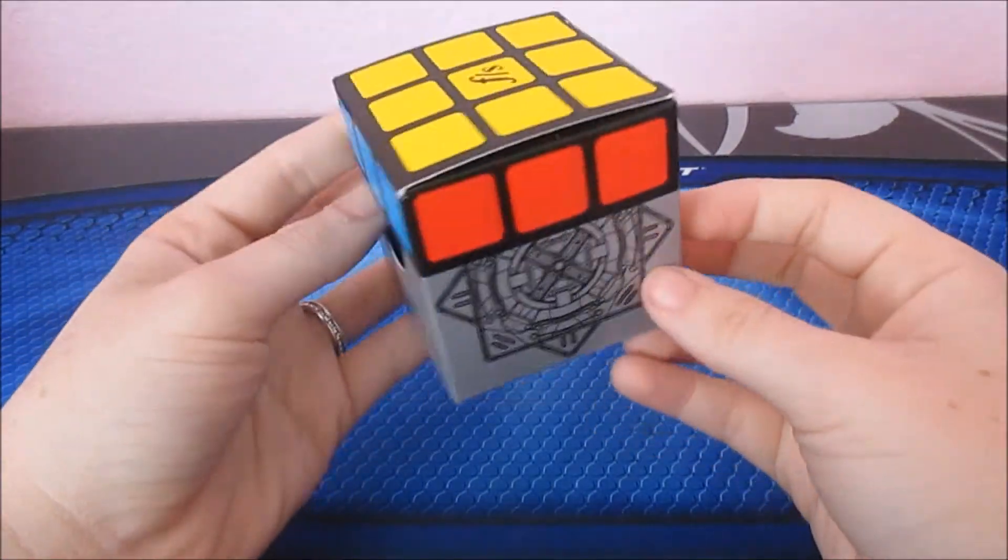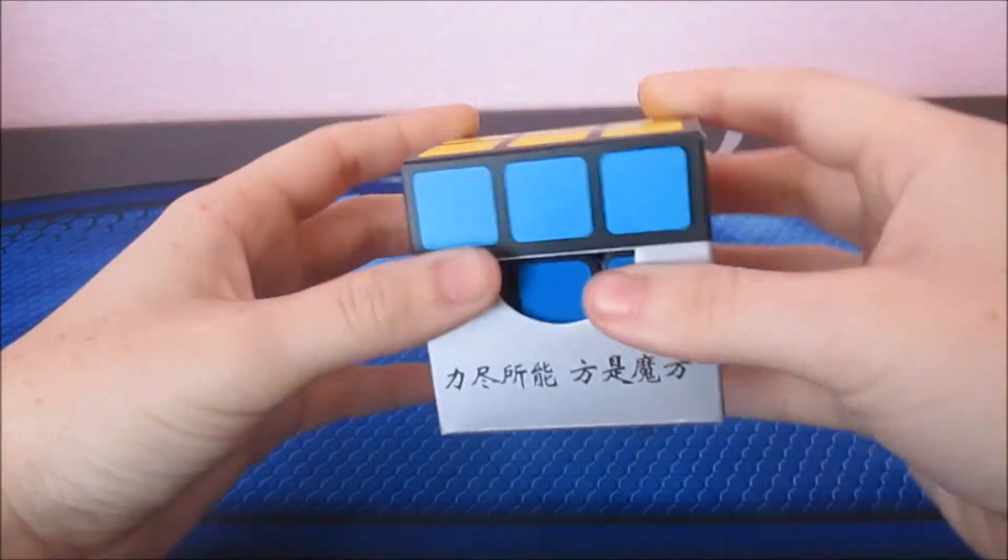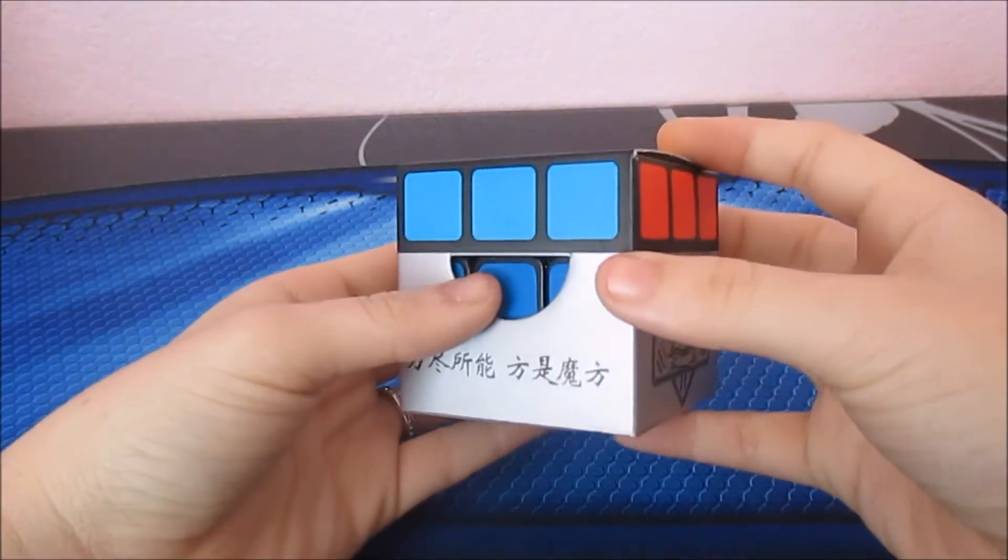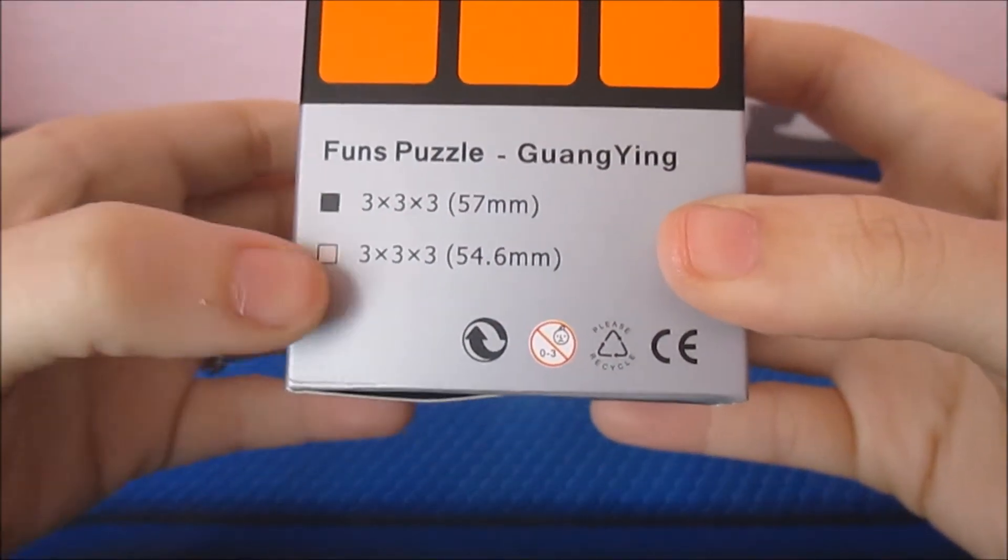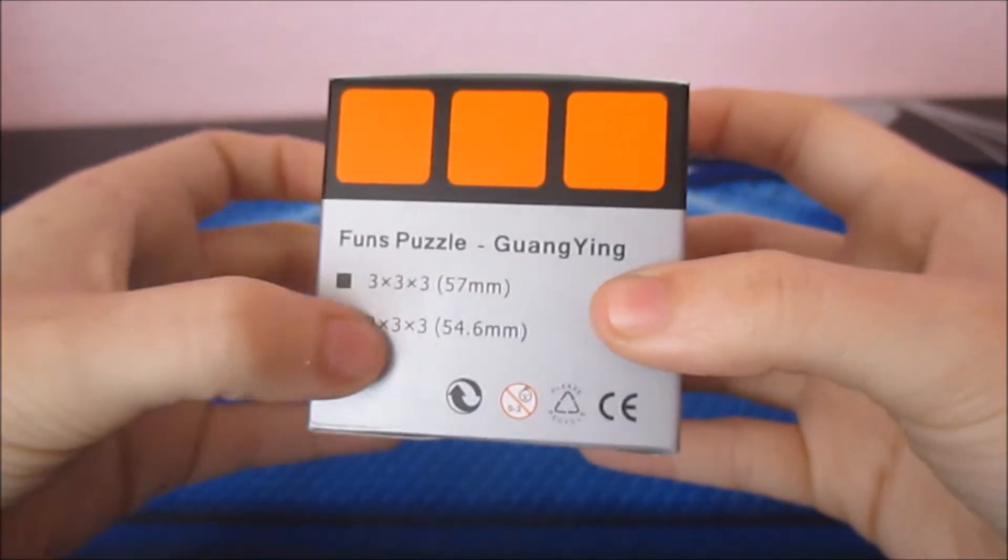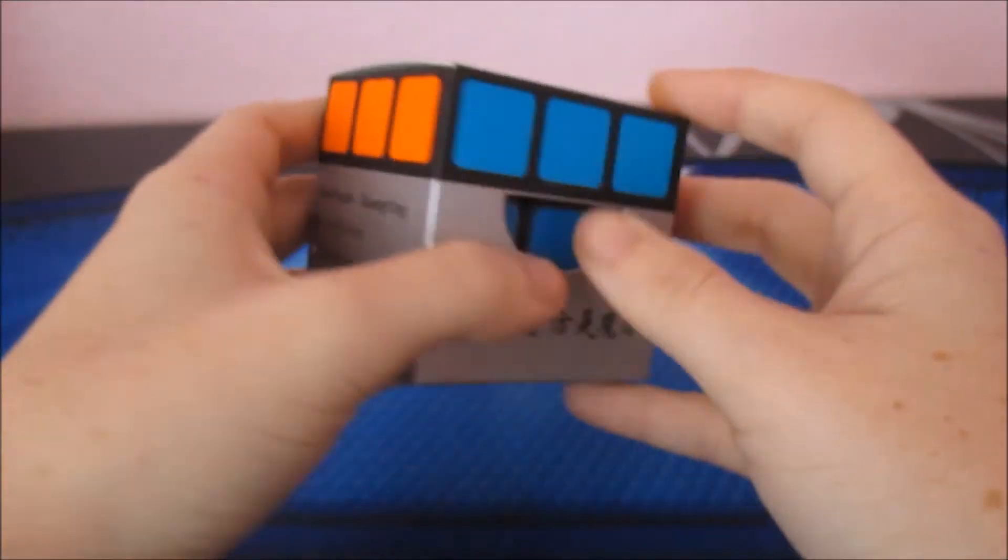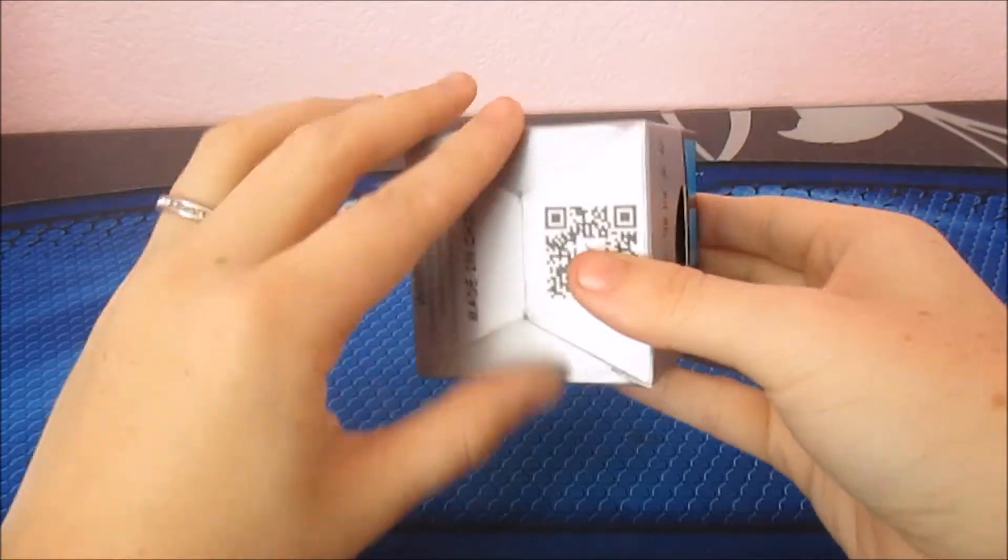So, this is the Fengshui Guangying. It comes in this nice box. Fengshui's always had some really cool designs on their boxes, and it also appears that they are going to be making a mini version of this cube, so that's pretty cool. Honestly, I'm not going to say anything about it yet, because I haven't even tried this puzzle yet. So, let's go ahead and get into this box.